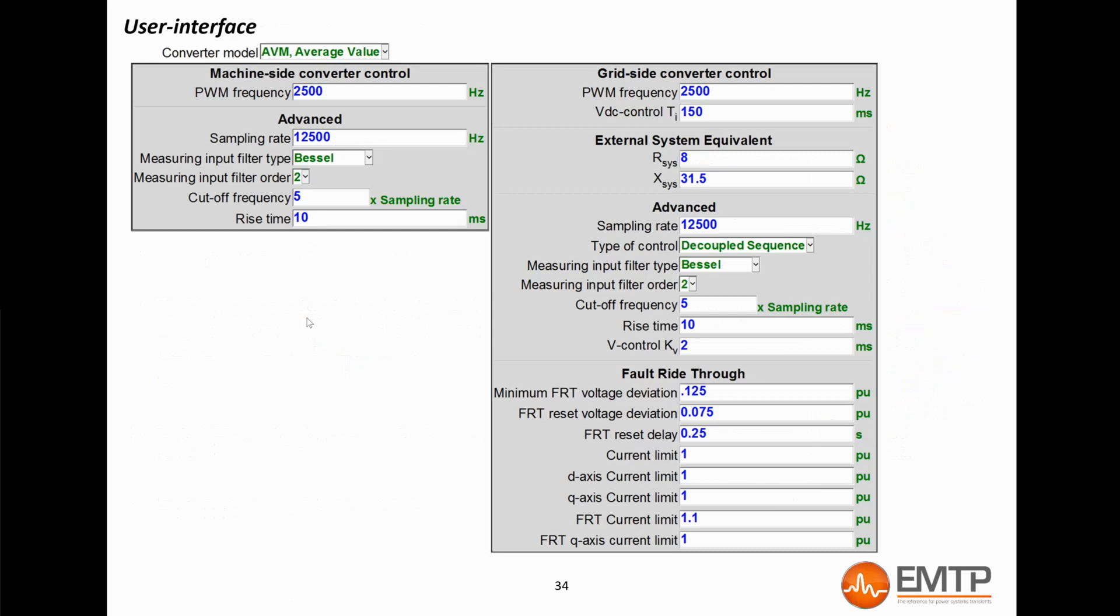Here is the user interface of the full converter mask. On the left side, you can set up the parameters related to the machine-side converter, the PWM frequency, the sampling rate, the measurement filter parameters, and the rise time for the inner loop. On the right side, you have the grid-side converter parameters, the PWM frequency, the speed for the DC outer loop control, the external system equivalent, which is the impedance of the transmission grid the park is connected to, and which is used to determine the PI controller gain of the inner loop. We explained that in a previous slide. The sampling rate, the type of control, this will be discussed in another video. The filtered measurement parameters, the V-loop gain, as explained in a previous slide, and the fault-ride-through characteristics.